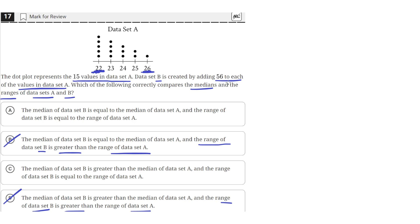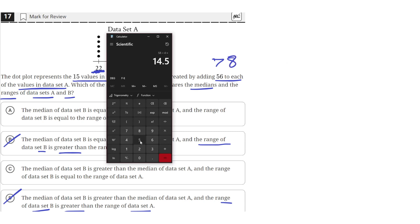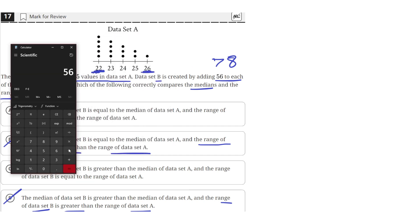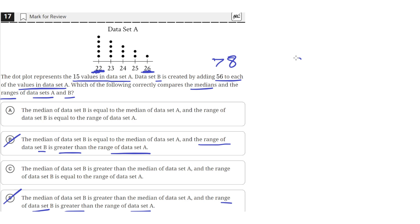the median will be much larger because it will have to be a value between 22 plus 56, so that's 78, and then 56 plus 26, so a value of 82, and all the other values in between.